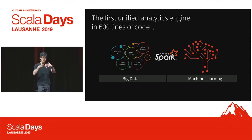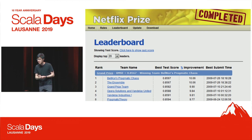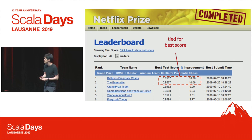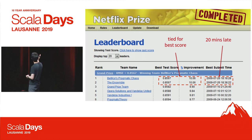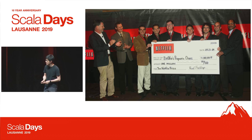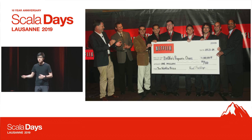And Spark just took off slowly from there. But what happened to Lester? This is the actual leaderboard of the Netflix Prize from back then. You can see the top two places are tied. Lester was part of the ensemble team, but the ensemble team submitted 20 minutes later than the first place. So they lost a million dollars. Here's a picture of the other team happily accepting the check. If Spark had been invented 20 minutes earlier, Lester would have been a million dollars richer.